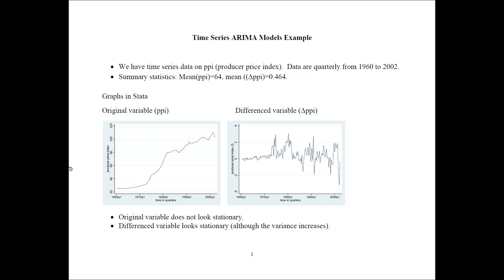Here are a couple of graphs from the data. This is how the original variable looks like, and from what I can tell, that variable does not look stationary. The difference variable, delta PPI or delta Y, looks more stationary — it's not increasing or decreasing, though the variance increases over time. Using the difference variable is more preferable than using the original variable.